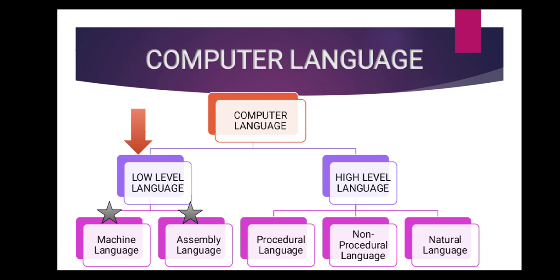Now we have covered low level language. We will start with high level language. High level language is such a language that uses simple English language — it doesn't use machine language. Work is easy to do because the instructions we can also understand. So this is called high level language.